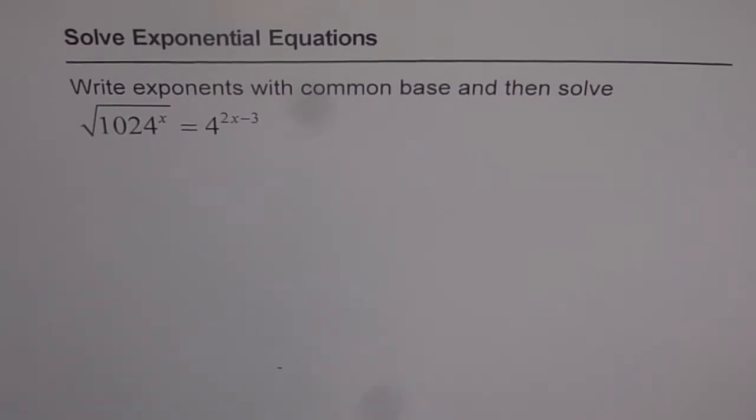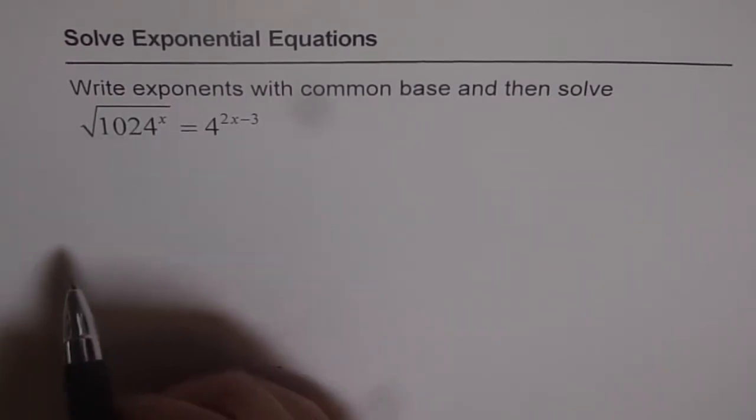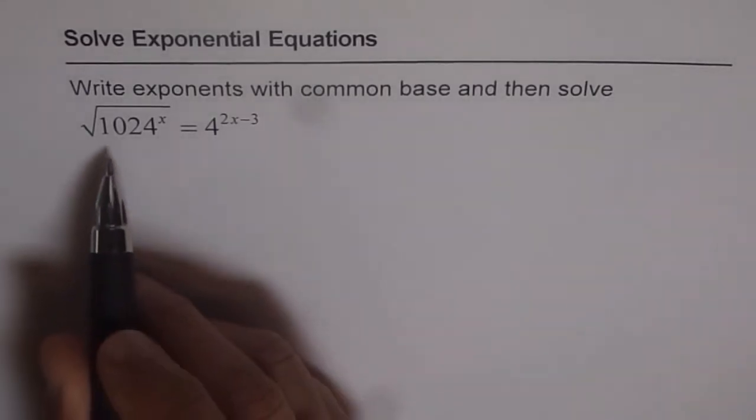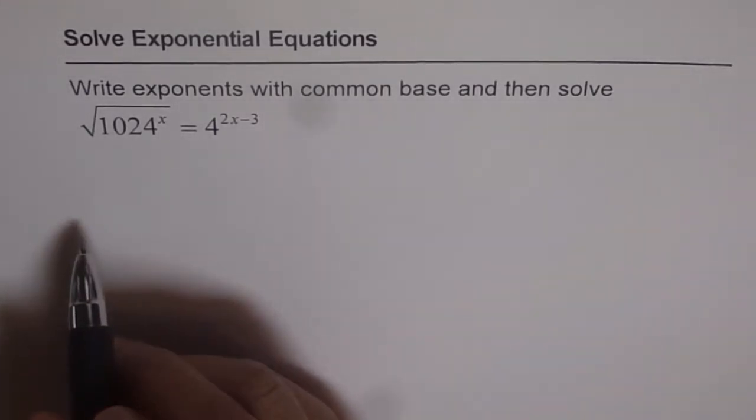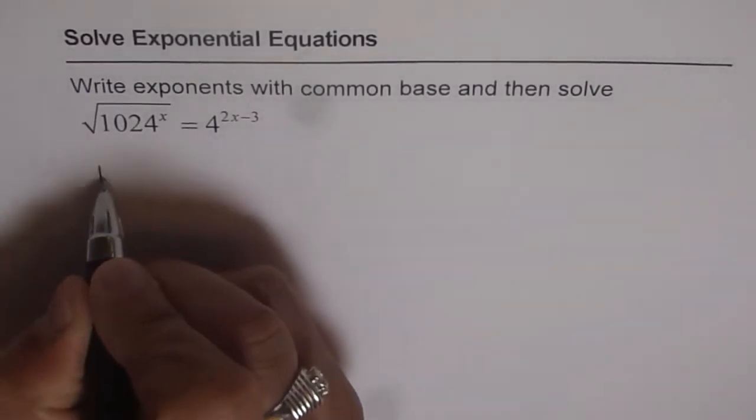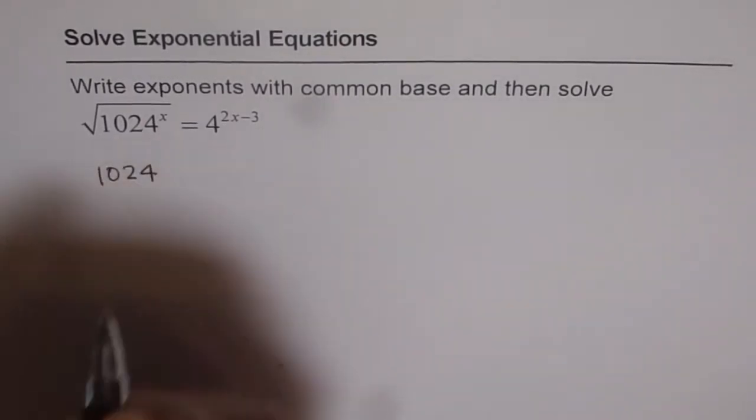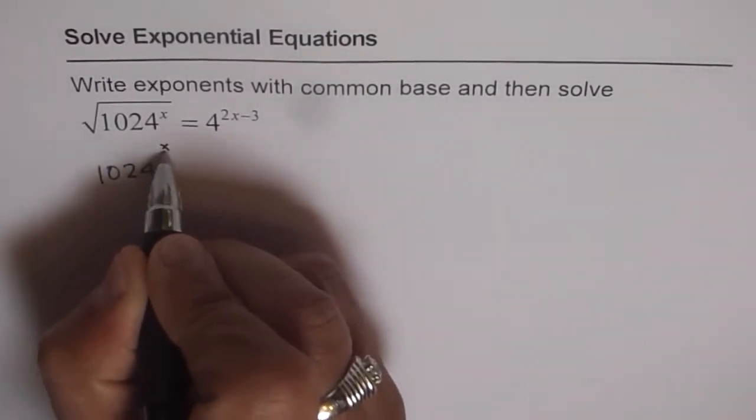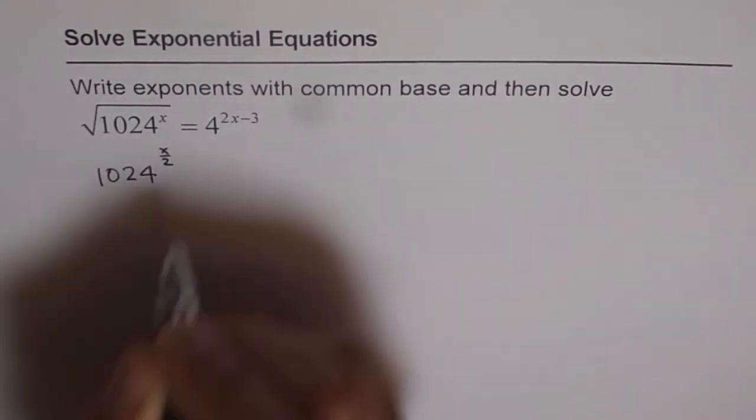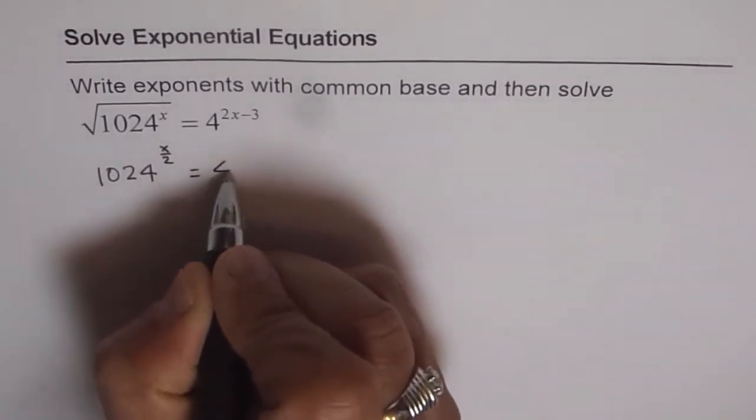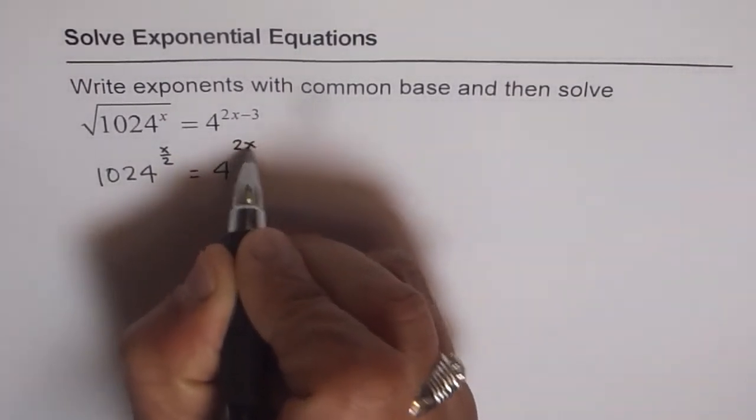In such questions, we should write them in exponent form. The left side can be written with a rational exponent as 1024 to the power of x over 2, since square root is half, which equals 4 to the power of 2x minus 3.